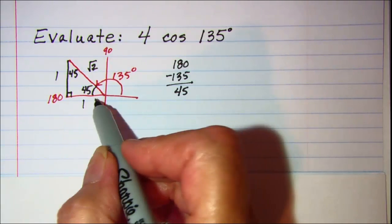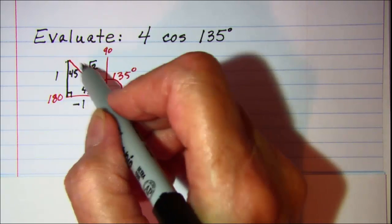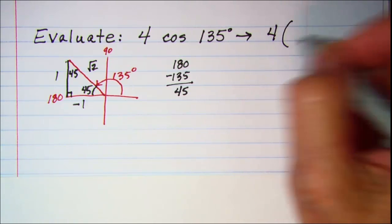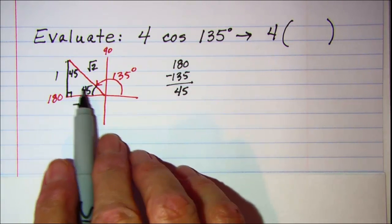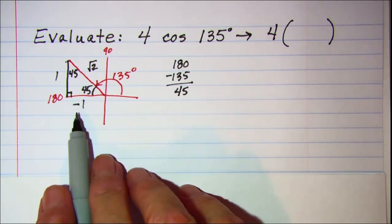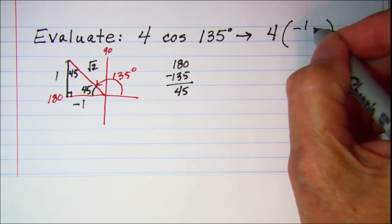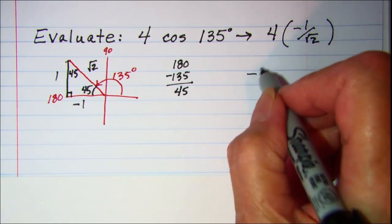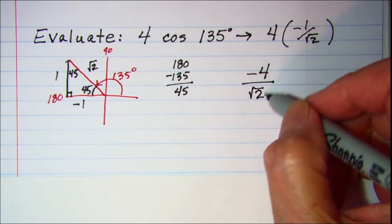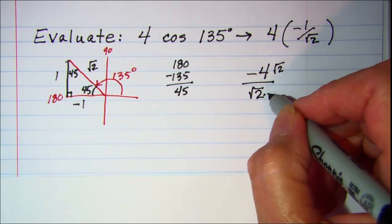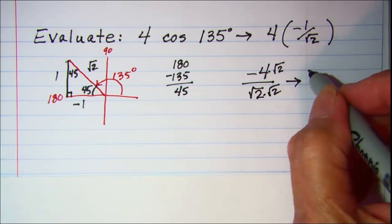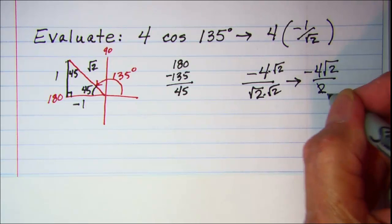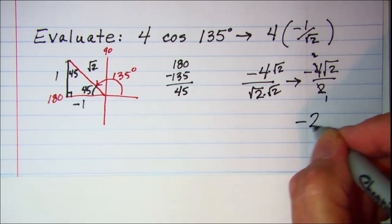In quadrant 2, the horizontal side is negative and the vertical side is positive, with the hypotenuse positive. So 4 times the cosine of 135 equals 4 times adjacent over hypotenuse, which is negative 1 over root 2. That gives negative 4 over root 2. Rationalizing by multiplying top and bottom by root 2 gives negative 4 root 2 over 2, which simplifies to negative 2 root 2.